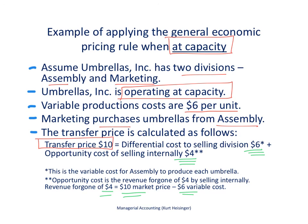That's how much the assembly department should charge the marketing department when selling umbrellas internally, because we are at capacity. So the transfer price, when we're at capacity in this example, is $10 per unit.